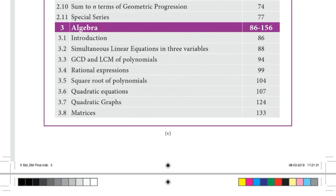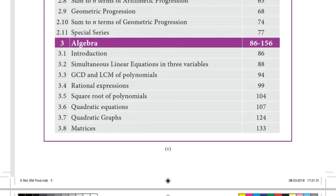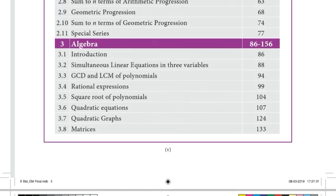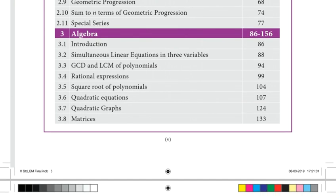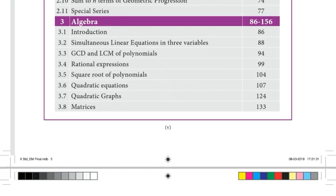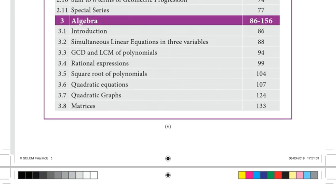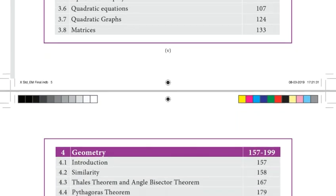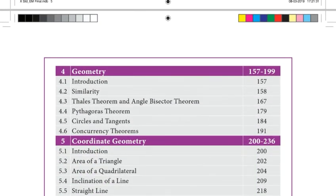The major topics in Algebra also include the Matrix. The fourth chapter is the Matrix, which is a very important topic. Following that, the fourth unit also covers Geometry.